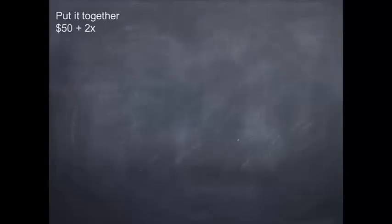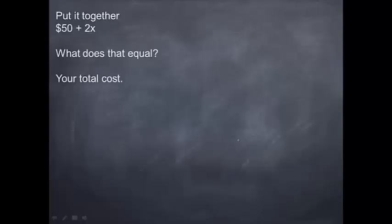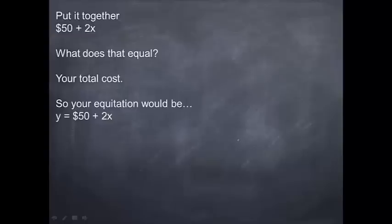Let's put those together. We have $50 plus 2x, because we're combining the flat fee and the number of visits times $2. So what does that equal? This is going to equal our total cost. Looking back at the equation, y is going to be the total cost. So your equation is going to be written as y equals $50 plus 2x.